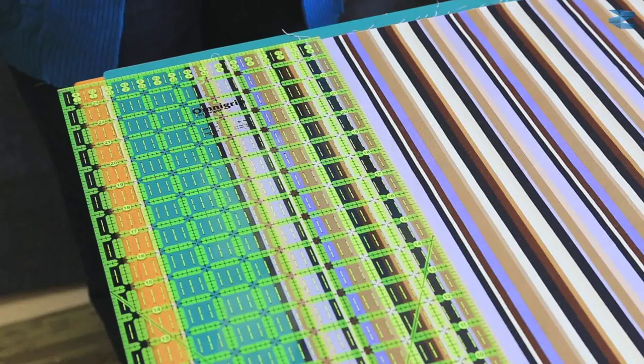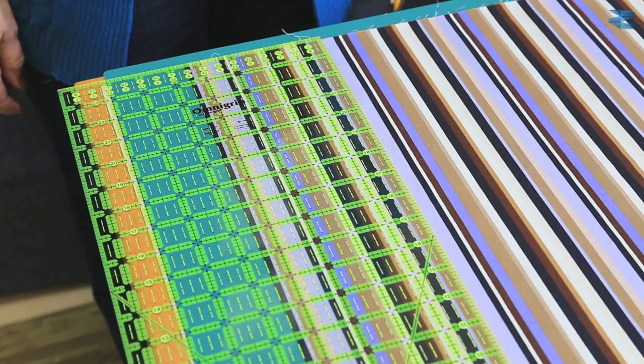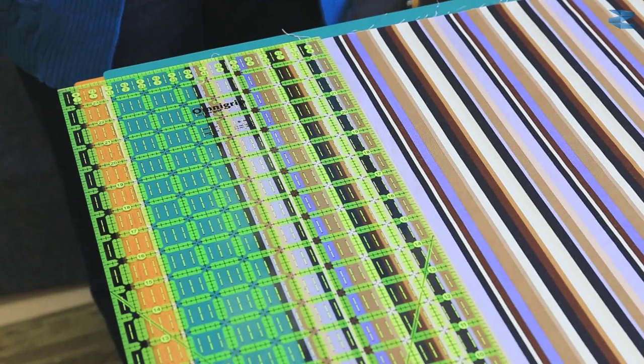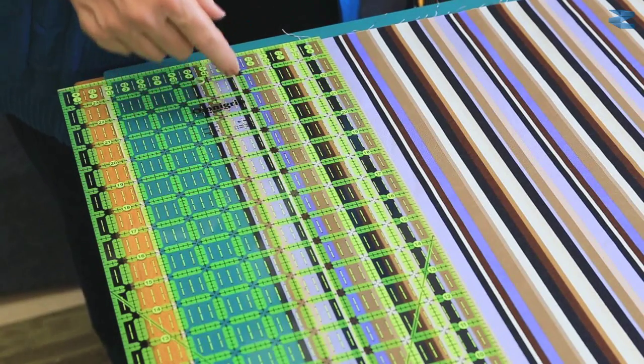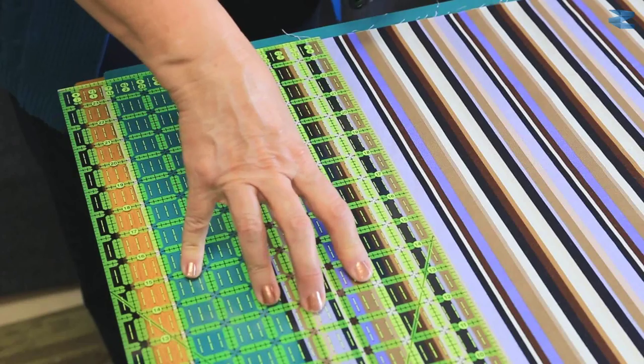For the eight inch finished hexagon, I need to cut a four and a half inch strip. So I've lined up the four and a half inch mark on the base of the fabric and now I'm going to cut this strip.